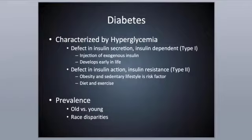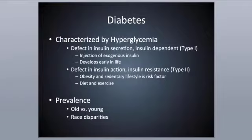In Type 2 diabetes, there's a defect in insulin action — these people are insulin resistant. Usually it has to do with the receptors within the cells not being able to utilize insulin as effectively as normal. Type 2 is associated with obesity and a sedentary lifestyle, which are the primary risk factors. Diet and exercise are really the best treatment.